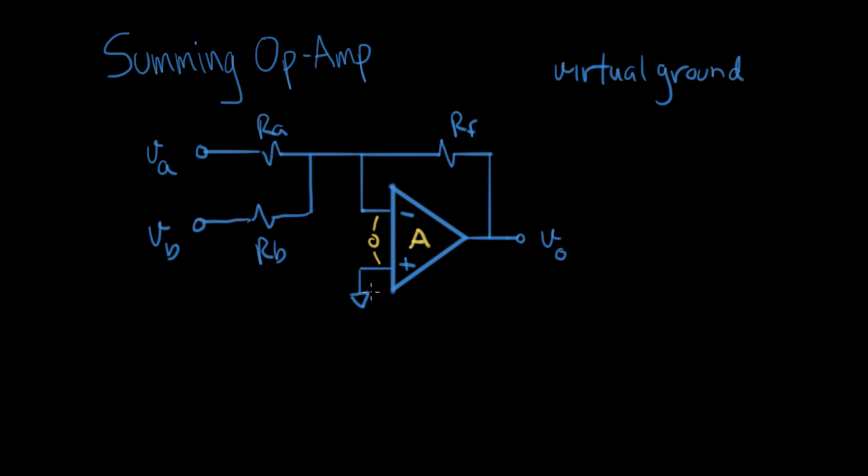Since this input is at zero volts, that means this input is very close to zero volts. So this node here is at a virtual ground.